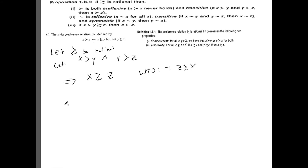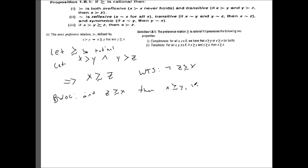We'll do a proof by contradiction. Assume that z is weakly preferred to x. Then we have x weakly preferred to y, y weakly preferred to z, and z weakly preferred to x. So by transitivity, this gives us that y is weakly preferred to z and z is weakly preferred to y.